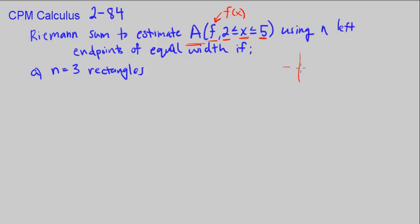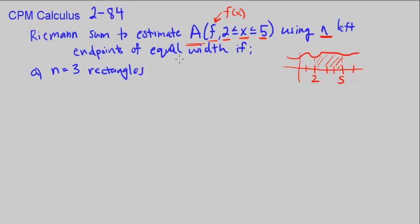So if we were to draw that out, we have 2 and 5, and wherever our function is, we want to look at the area between 2 and 5. We want to estimate using n left endpoints of equal width.